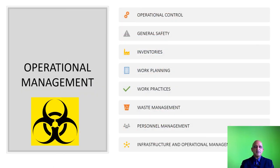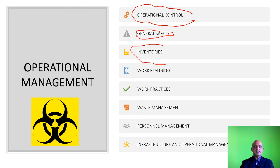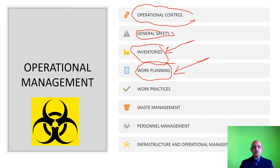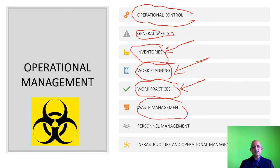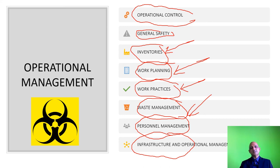We now move on to operational management. Operational management involves operational control, general safety, and management of inventories — which is very important for biosecurity, as you must maintain inventories of all biological agents being stored or processed at your facility. It also covers work planning, assigning work within the capacity of individuals both intellectually and in terms of psychomotor capacity, work practices and best practices in the workplace, waste management, personnel management, identifying and training personnel, and infrastructure and operational management.